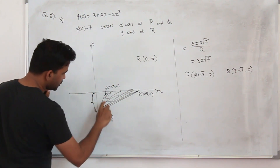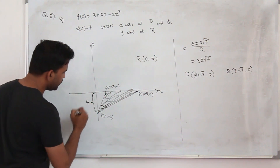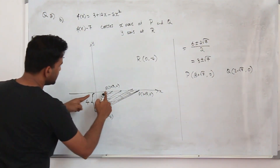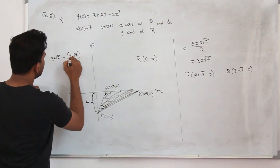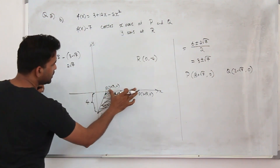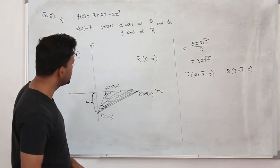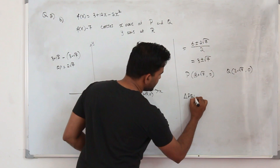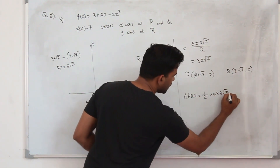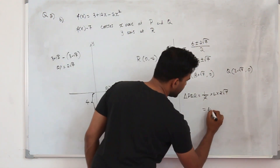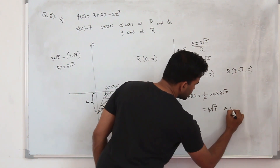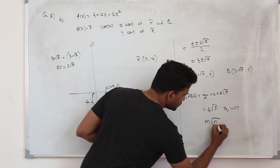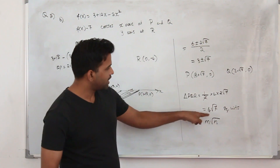Take QP as the base. The height is the perpendicular from R to the base, which is 4 units (the absolute y-value of R). The base length is (3 + √7) - (3 - √7) = 2√7. Area of triangle PQR = ½ × base × height = ½ × 2√7 × 4 = 4√7 square units. The answer in the form m√n is 4√7, where m = 4 and n = 7.